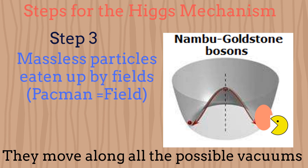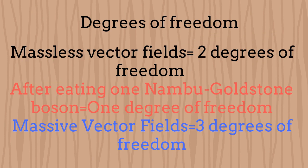Before eating, Pac-Man was massless. After eating, he would become massive. In physics, we classify the counting of degrees of freedom for the fields in agreement with the spin they carry. A vector field, for example, being spin 1, if it is massless, would represent 2 degrees of freedom. If it becomes massive, then it carries 3 degrees of freedom. Each Nambu-Goldstone boson, being a scalar with spin 0, would represent 1 degree of freedom. Then, if a massless vector field eats one Nambu-Goldstone boson, the vector field would become massive, carrying 3 degrees of freedom.